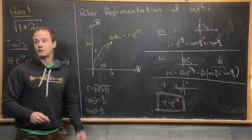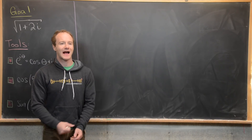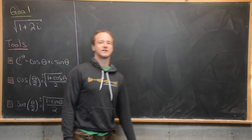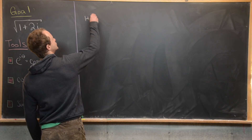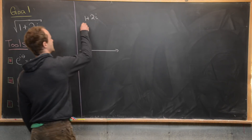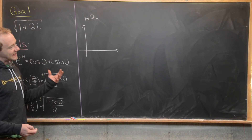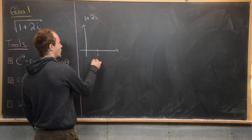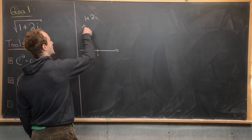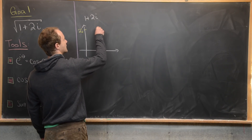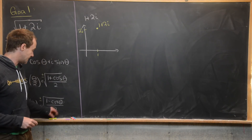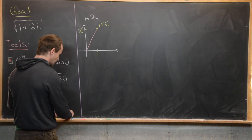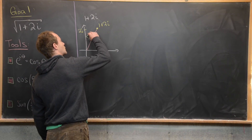Now that we've done some background on the polar representation of a complex number, let's do our goal: take the square root of 1 plus 2i. First, let's look at 1 plus 2i itself. Drawing it on the complex plane, it's going to live right about here — one unit along the real axis and two units up in the imaginary direction, so we have the point 1 plus 2i. Drawing a line segment from the origin, we can do a quick calculation to see that its distance from the origin is the square root of five.